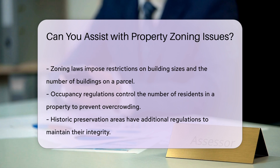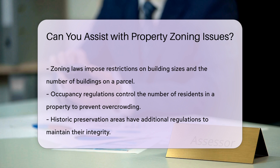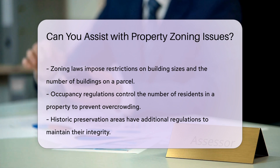Land use rules. Zoning laws dictate whether a property can be used for residential, commercial, or industrial purposes. Using land in a way that's inconsistent with its classification can lead to fines or denied permits.